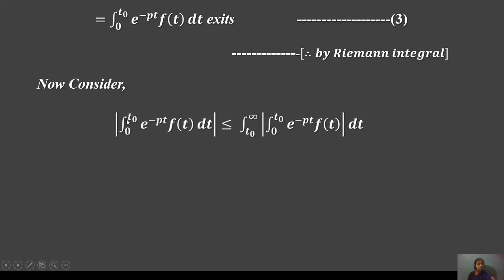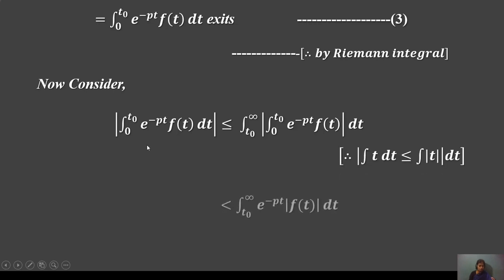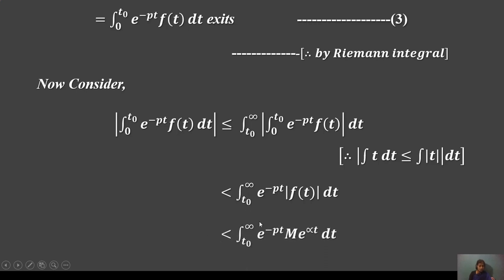Now consider the modulus: the integral from t₀ to infinity of e^(−pt) f(t) dt. Taking the modulus inside, we consider the integral from t₀ to infinity. Applying the theorem condition, mod of f(t) is bounded by M·e^(αt).